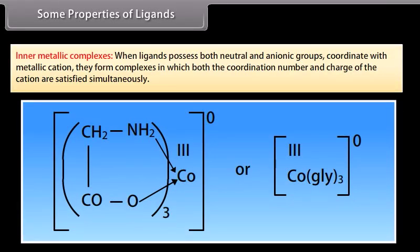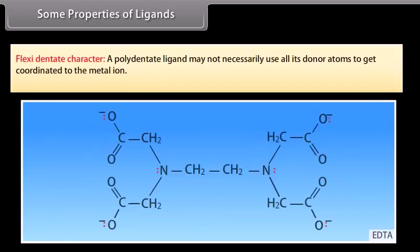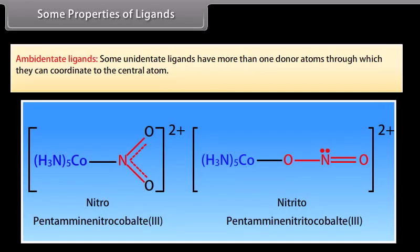Some properties of ligands. Inner metallic complexes: when ligands possess both neutral and anionic groups and coordinate with a metallic cation, they form complexes in which both the coordination number and charge of the cation are satisfied simultaneously. Flexidentate character: a polydentate ligand may not necessarily use all its donor atoms; for example, EDTA can act as a hexadentate, pentadentate, or tetradentate ligand. Ambidentate ligand: some unidentate ligands have more than one donor atom through which they can coordinate to the central atom.